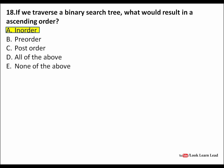If you traverse a binary search tree, what would result in ascending order? This is a data structure question. In-order traversal — which visits left, then root, then right — gives ascending order. So the answer is in-order traversal.